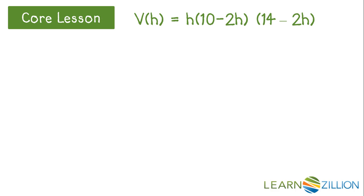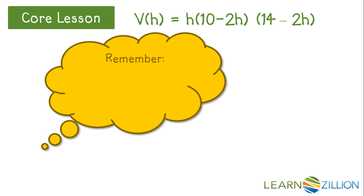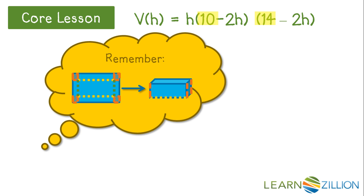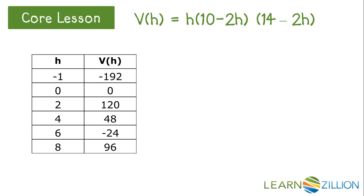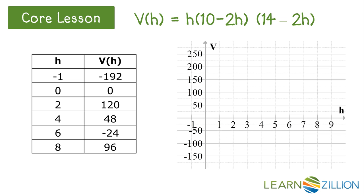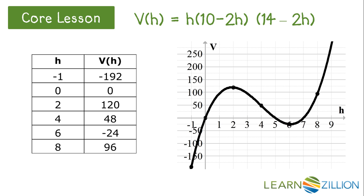Now let's take a look at the V function that we created in earlier lessons. Remember, the V function stands for the volume of a box as a function of its height. We created this function by first taking a piece of cardboard that measured 10 inches by 14 inches, cutting a square out of each corner, and folding up the sides to create a box. Then to create the graph of the function, we first made a table of points by selecting input values, plugging them into our function to get output values, and creating a grid. Notice that the grid has a domain of negative 2 to 10 and a range of negative 200 to 300 to fit all of our points. Then we plotted our points and connected them to get this polynomial graph.